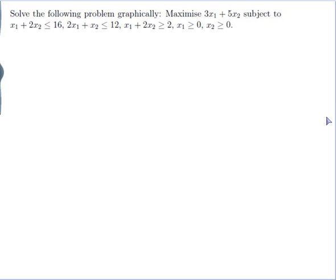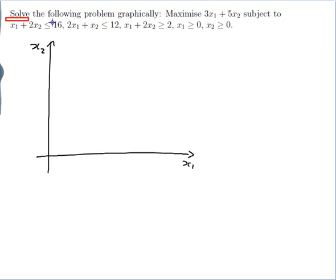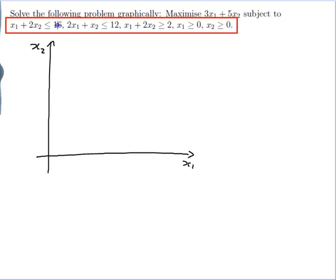It says to do it graphically so I need to draw a graph with axes x1 and x2. When it says to maximise something subject to all of this, all of this defines a region on my graph. It will be a convex set defined by each of these inequalities. Each inequality will usually represent a line, and the less than or equal to or greater than or equal to will be one side of the line or the other. I need to take each of them separately and figure out which side I want.